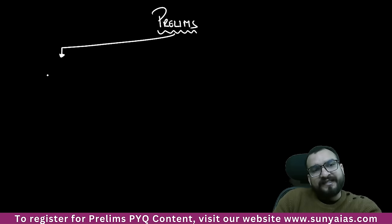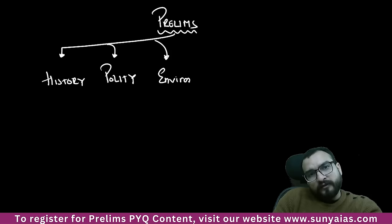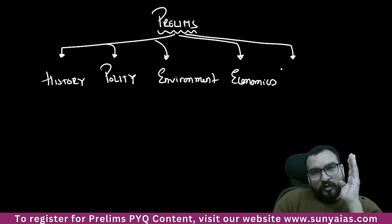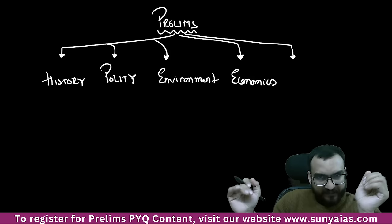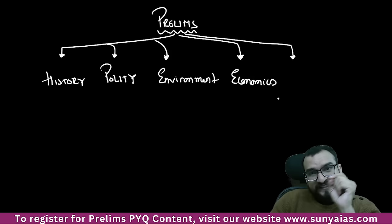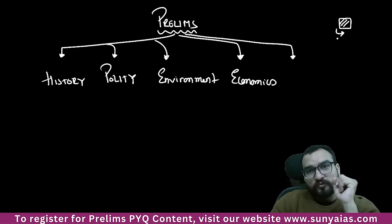What subjects do you have in prelims? The main subjects are history, polity, environment, economics, science and technology, and geography — these are your major static subjects. I am telling you this mindset: no matter how much information you collect, the mindset should be right and in line with the UPSC trend. That's why with limited information, you will be clearing prelims.